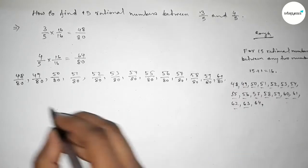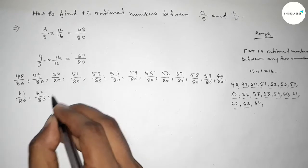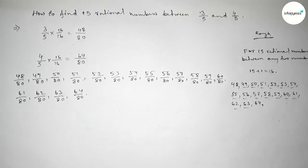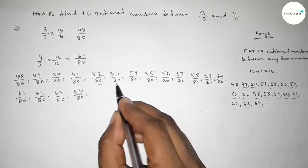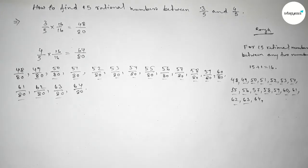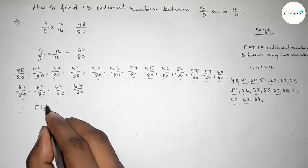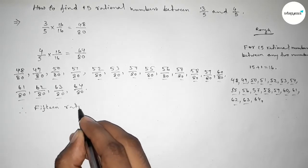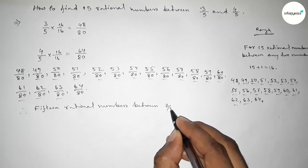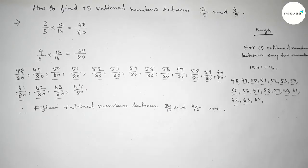So first of all we write down all the rational numbers, and among these, these are the required 15 rational numbers between 3 over 5 and 4 over 5. Therefore, the required 15 rational numbers between 3 over 5 and 4 over 5 are as follows.